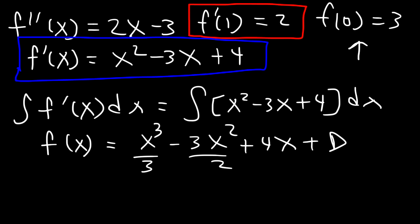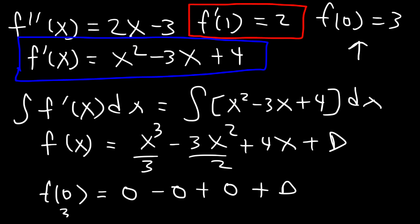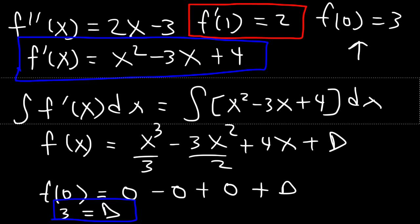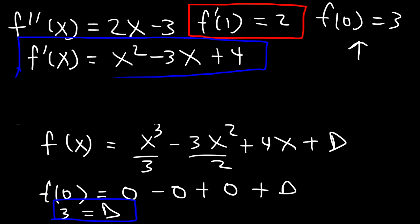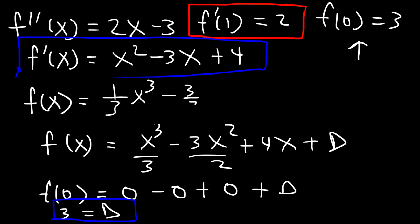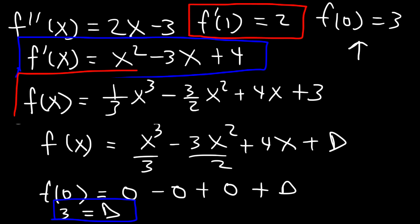Now f(0) is 3. So f(0): 0 to the third is 0, 0 squared times 3 over 2 is 0, and 4 times 0 is 0, plus d. Since f(0) is 3, d equals 3. So the final answer is f(x) equals one-third x cubed minus three-halves x squared plus 4x plus 3. That is the solution to the differential equation.